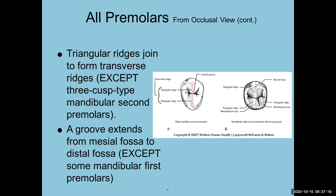Still looking at the occlusal: triangular ridges form transverse ridges when the buccal triangular ridge and the lingual triangular ridge form a straight line. You've got a transverse ridge from the buccal and lingual triangular ridges. For the three-cusp type, you have three triangular ridges — none of them form a transverse ridge. These transverse ridges need to be marked on your tooth drawings.